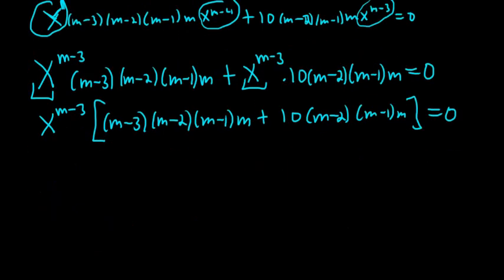We can divide by the x to the m minus 3, so I'm just going to cross it out. And then here we have to figure out what to do. We have m, m minus 1, m minus 2 appearing twice.